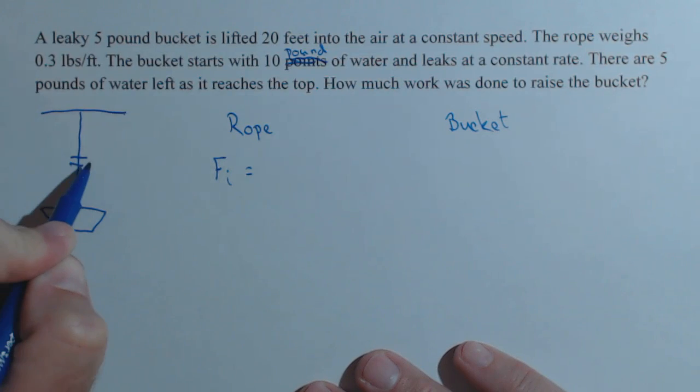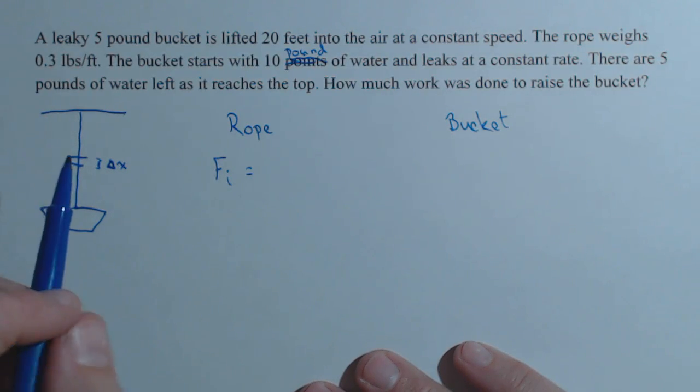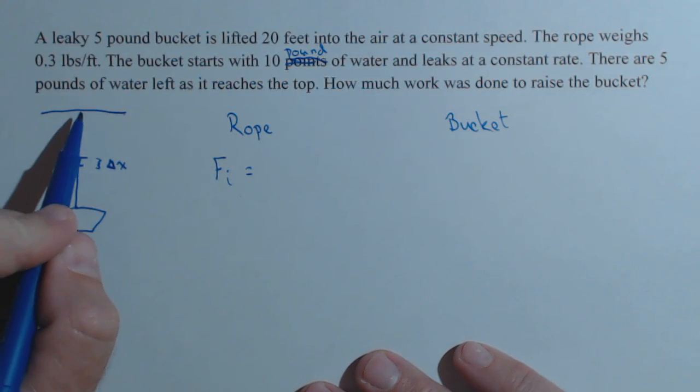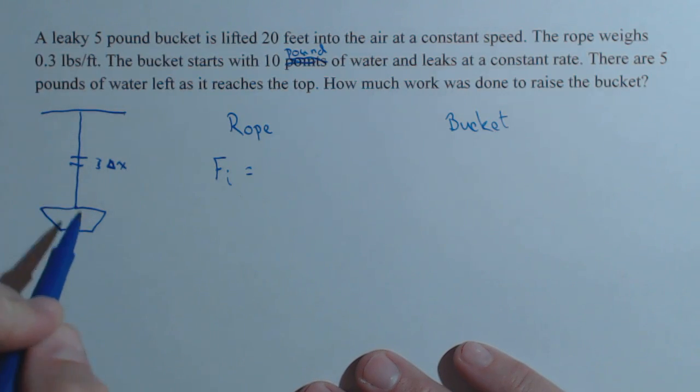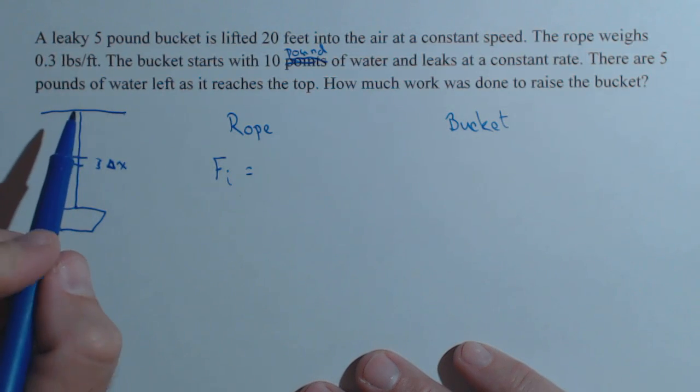So let's take a slice that has an arbitrary thickness of delta x. Now, in my drawing, I'm probably going to want to label something x sub i, and that could either be the distance from my slice to the top, or the distance from my slice to the bucket, and it doesn't matter. It's all going to work out finding our integral.